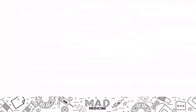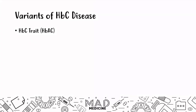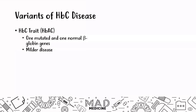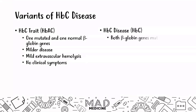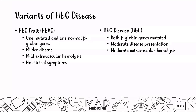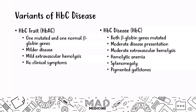There are also variants of hemoglobin C disease you should be aware of. First, hemoglobin C trait — HbAC — where one gene is mutated and one normal beta globin gene is present. This is a very mild disease with mild extravascular hemolysis and no real clinical symptoms; you may see mild splenomegaly or hepatosplenomegaly, but patients are going to be perfectly fine and their oxygen delivery function is still working. Then you have hemoglobin C disease — HbCC — where both beta globin genes have the glutamic acid to lysine mutation, giving a more moderate disease with moderate extravascular hemolysis, hepatosplenomegaly, hemolytic anemia, splenomegaly, and pigmented gallstones.